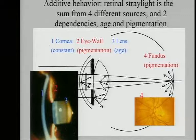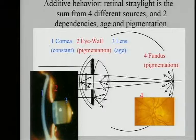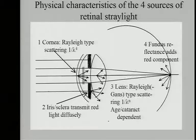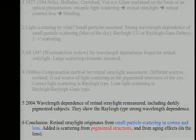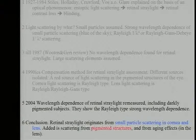In conclusion, we have several opposing processes in the eye. The cornea is blue dominant. The eye wall is red dominant. The lens is blue dominant. And the fundus is red dominant. This summarizes the physics: Rayleigh type, Rayleigh-Gans type, diffuse transmissivity, and fundus reflectance. These were experiments to isolate all the different sources in the eye that scatter light — each characterized separately, but in isolation.